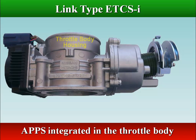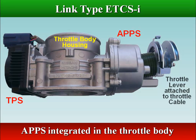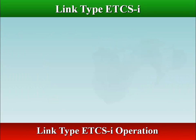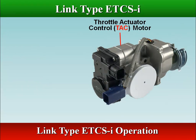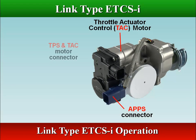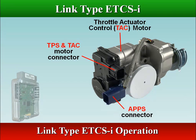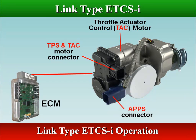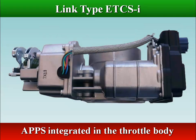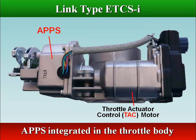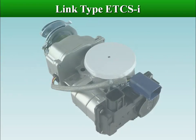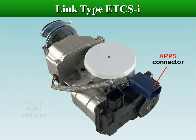The ECM uses the signal to calculate the desired throttle valve angle. The throttle control motor is a DC motor controlled by the ECM; the ECM controls the direction and amperage of current through the motor. If there is a malfunction in the system, the ECM turns off the motor circuit and magnetic clutch if present, and the return springs close the throttle valve.